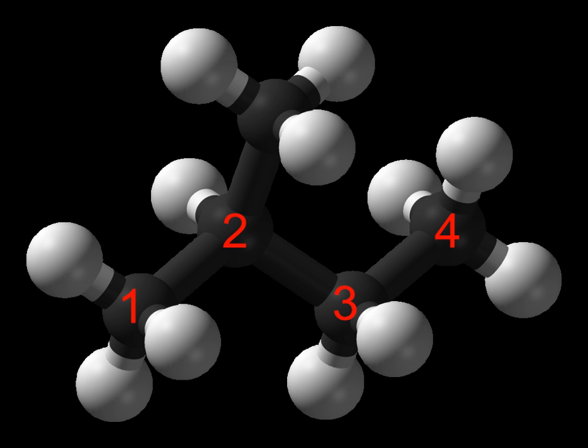The alkanes have two main commercial sources: petroleum and natural gas. An alkyl group, generally abbreviated with the symbol R, is a functional group that, like an alkane, consists solely of single-bonded carbon and hydrogen atoms connected acyclically — for example, a methyl or ethyl group.